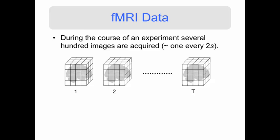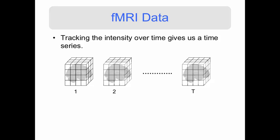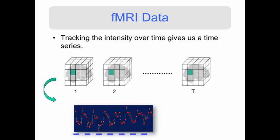Now, if we look at a single voxel of the brain — remember, each voxel has an intensity associated with it — we can extract that intensity value for that voxel across time, and then what we get is a time series such as the one shown.